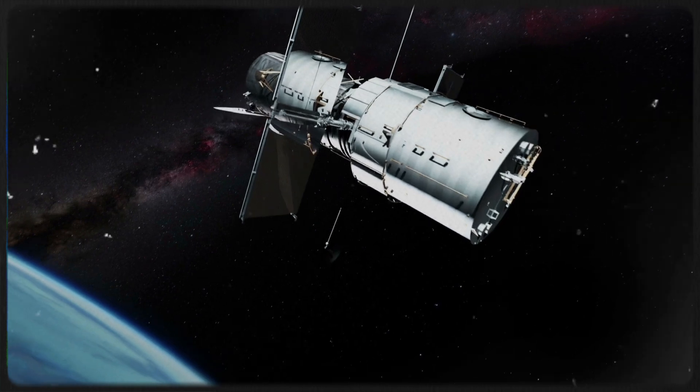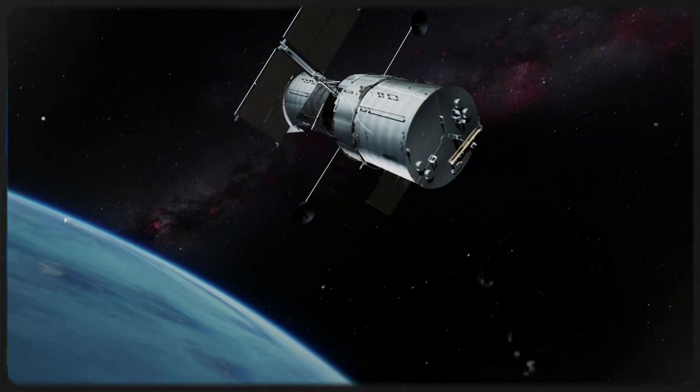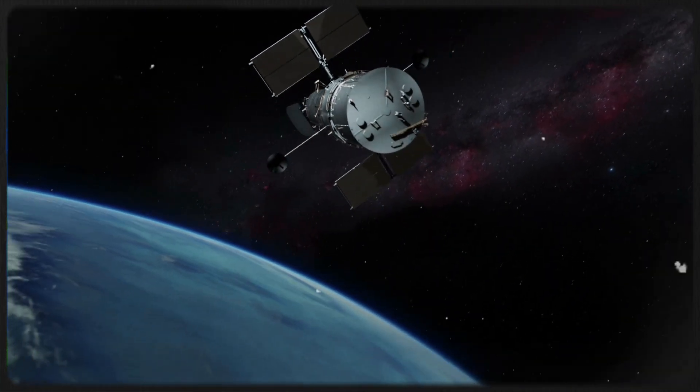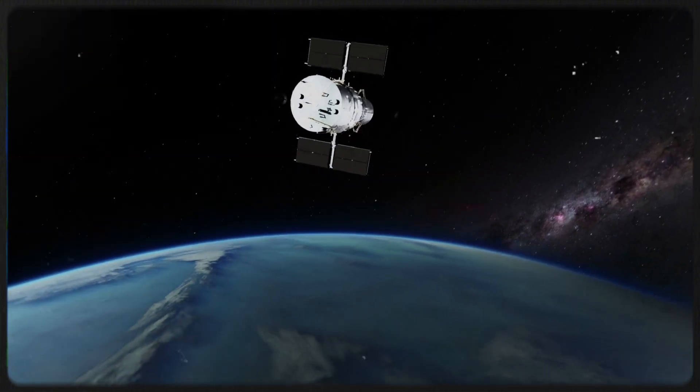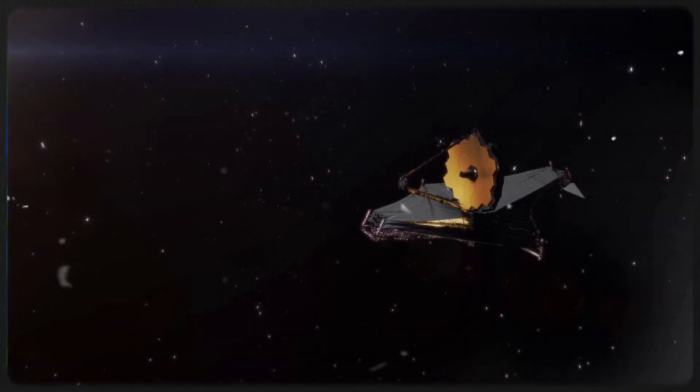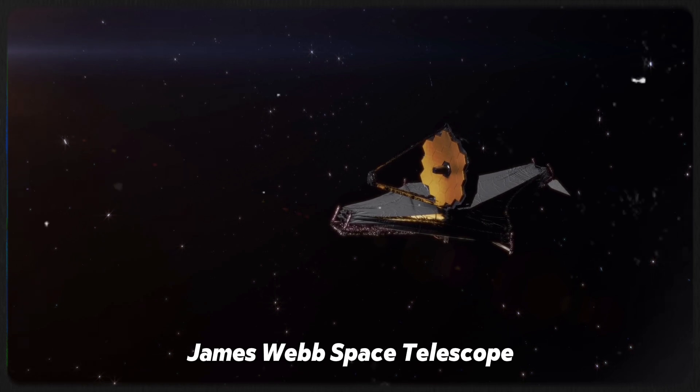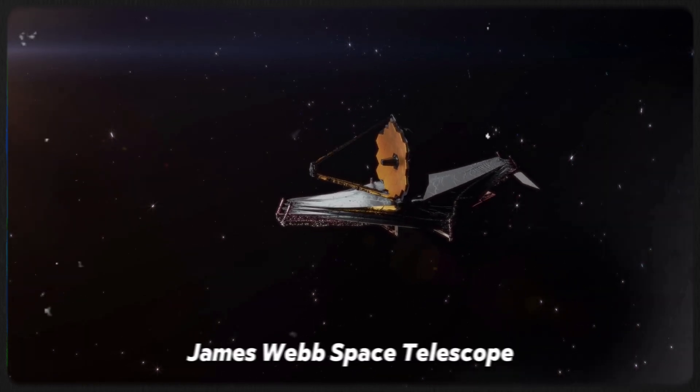Still, sometimes even Hubble can miss out on hidden wonders. Take, for example, a specific patch of the sky that initially appeared completely dark through Hubble's lens. But when astronomers turned their attention to the James Webb Space Telescope, something extraordinary happened.